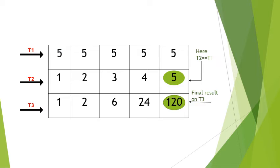As we discussed before, T2 equals T1. We took the N value as 5. In track 2, we have reached 5, and in track 1, the value equals track 2. So the final result will be stored in track 3, which is 120. The factorial of 5 is 120.